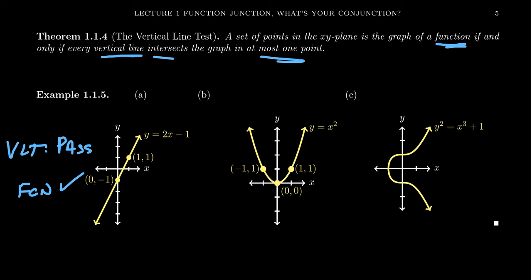This second picture right here is a parabola—in fact, it's y equals x squared. You can see that every vertical line intersects the graph at exactly one point, so this one also passes the vertical line test. This is also the graph of a function.